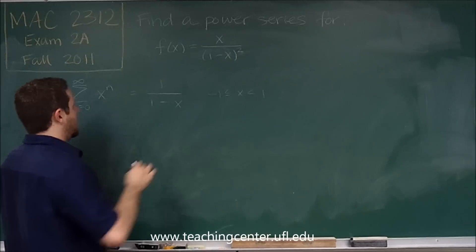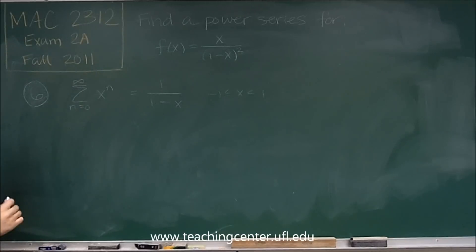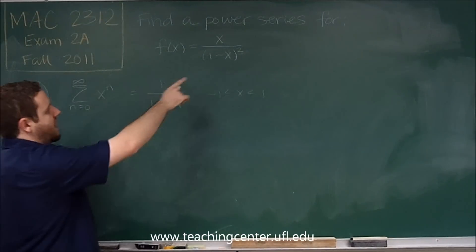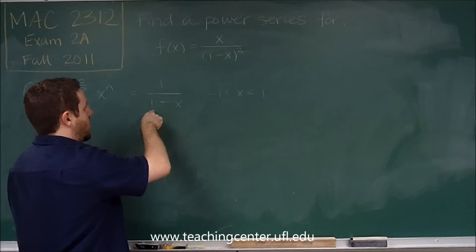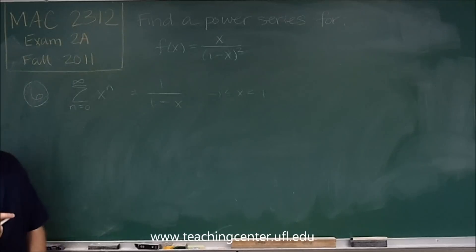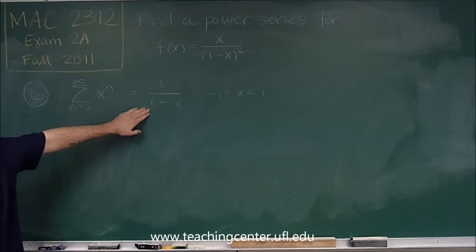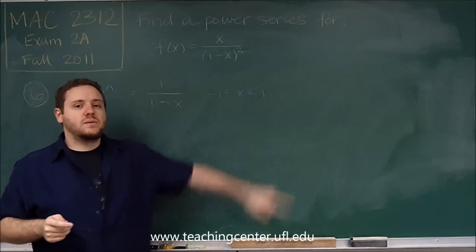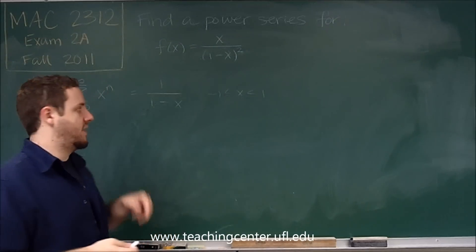So what we have here is x over 1 minus x quantity squared. Now this is in the denominator, so if we wanted to increase its power we would need to take the derivative of that.